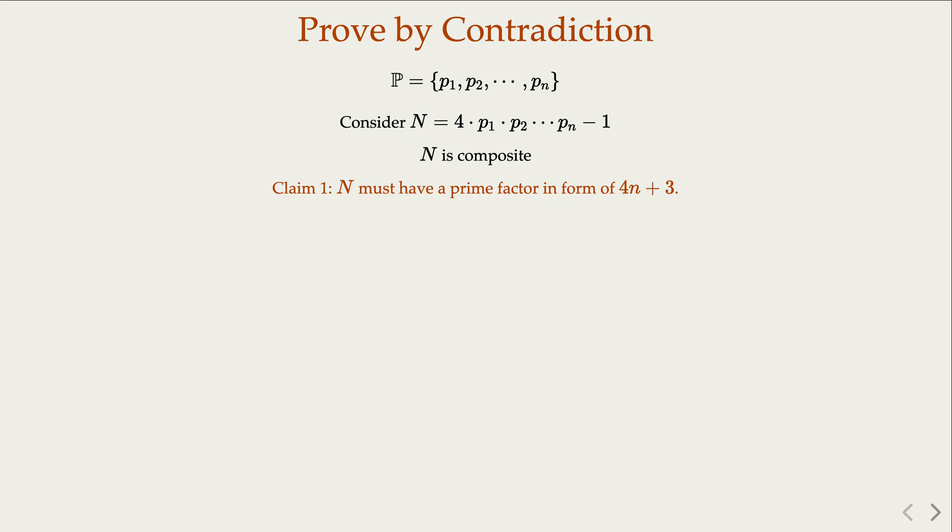How do we show that? Again, by contradiction. If not, if N has all prime factors in the form of 4m plus 1, notice that N here is an odd number. It cannot have a prime of 2. So all the prime factors must be odd numbers, either 4m plus 1 or 4m plus 3. Now assume all of them are 4m plus 1. What do we get?